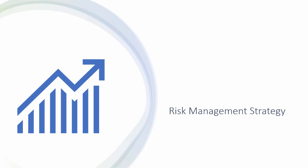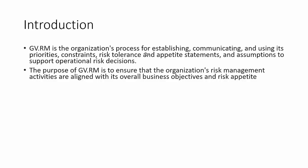We need to have a risk management strategy before doing any risk assessment. GV.RM — Governance Risk Management — is the organization's process for establishing, communicating, and using its priorities, constraints, risk tolerance, appetite statements, and assumptions to support risk decisions. The purpose of GV.RM is to ensure the organization's risk management activity is aligned with overall business objectives and risk appetite.